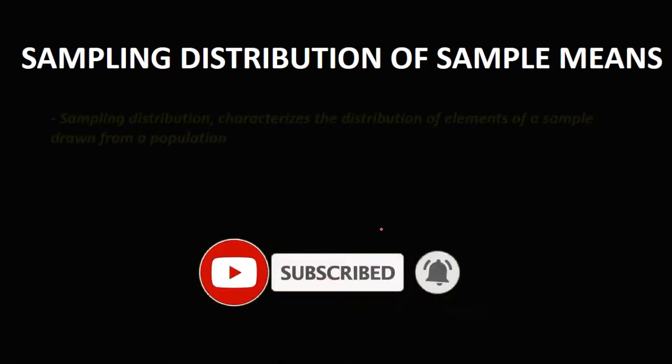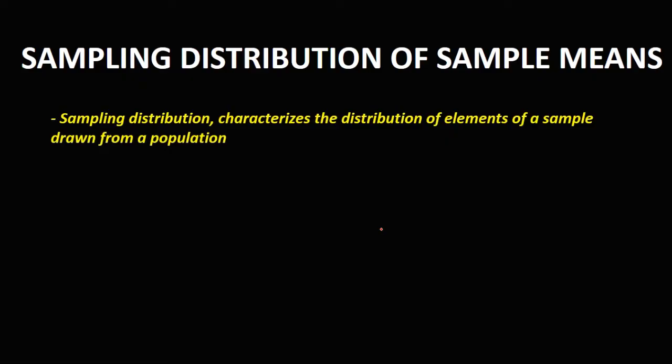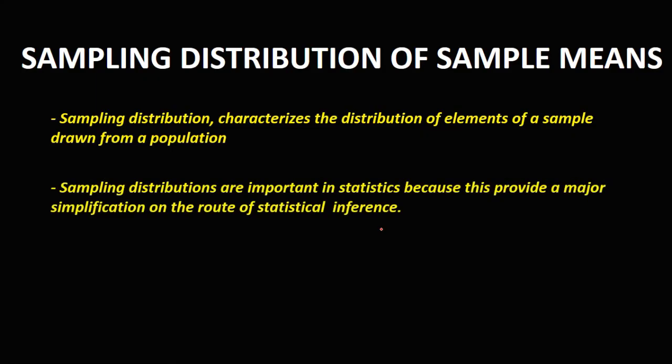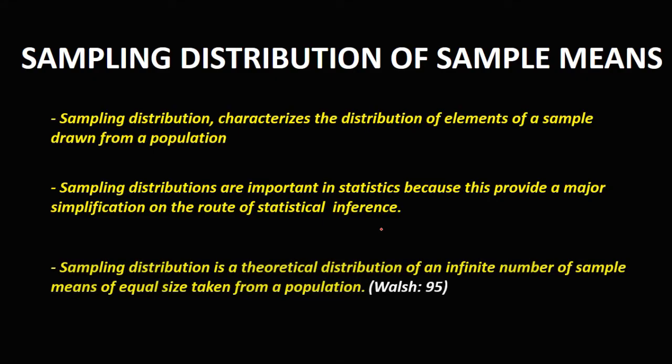Let's have this topic: the sampling distribution of sample means. Sampling distribution characterizes the distribution of elements of a sample drawn from a population. It is important in statistics because it provides a major simplification on the route to statistical inference. According to Walsh, a sampling distribution is a theoretical distribution of an infinite number of sample means of equal size taken from a population.